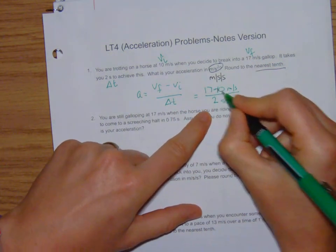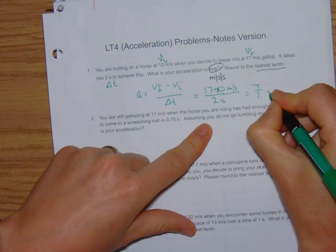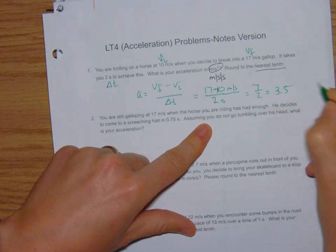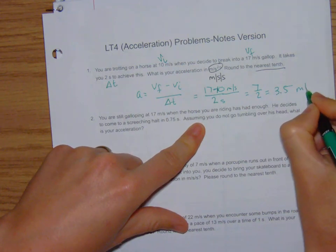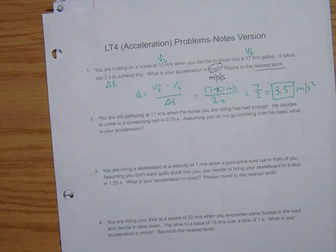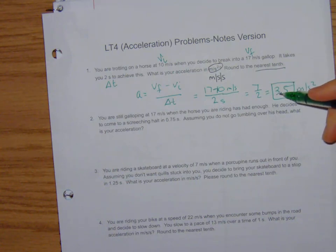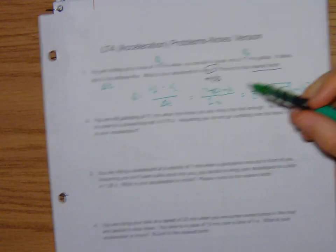So 17 minus 10, that gives us 7 over 2 which is 3.5. We need the tenth so here's our units. But into the Moodle box we would just type 3.5. And just use some common sense. We're getting faster so we should end up with a positive number if you're gaining speed.